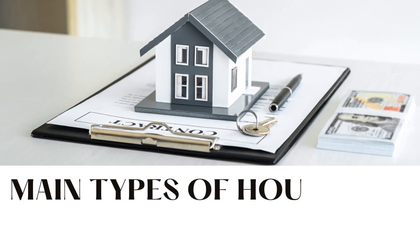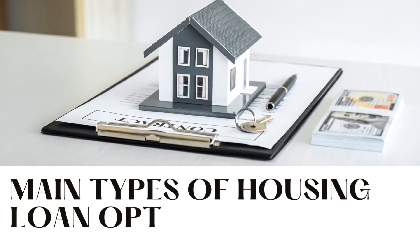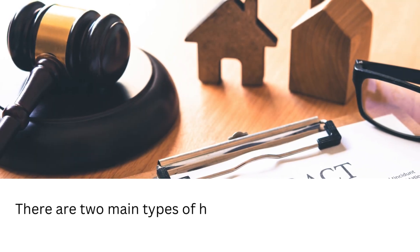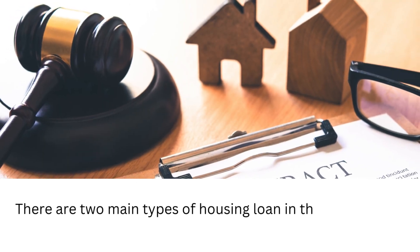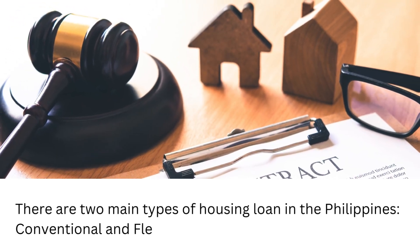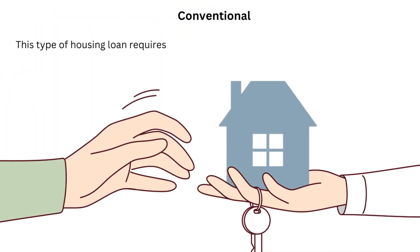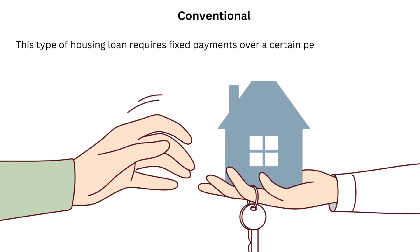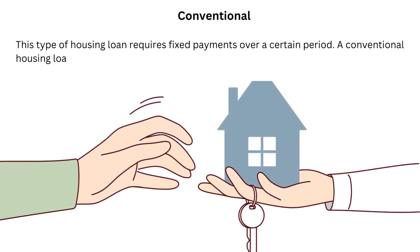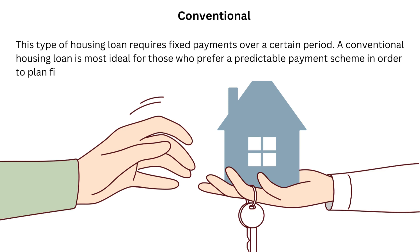There are two main types of housing loan in the Philippines: conventional and flexible. Conventional: This type of housing loan requires fixed payments over a certain period. A conventional housing loan is most ideal for those who prefer a predictable payment scheme in order to plan finances ahead of time.